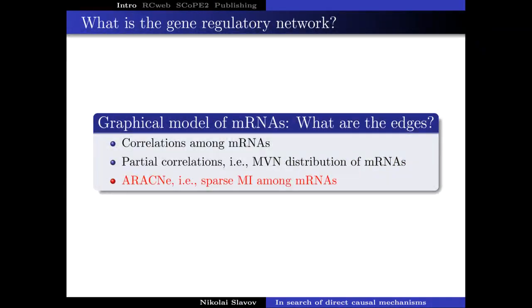We can do a little better by using mutual information, which allows us to account for arbitrary nonlinear interactions in principle between variables — assuming we can compute the mutual information, which is not trivial. It's actually very difficult to reliably estimate joint distributions from finite data, especially noisy data. Now let's say you've done ARACNE on the best data set you could generate and you find that the mutual information between RNA i and RNA j is very high. Why might that be? Can you give some possibilities?